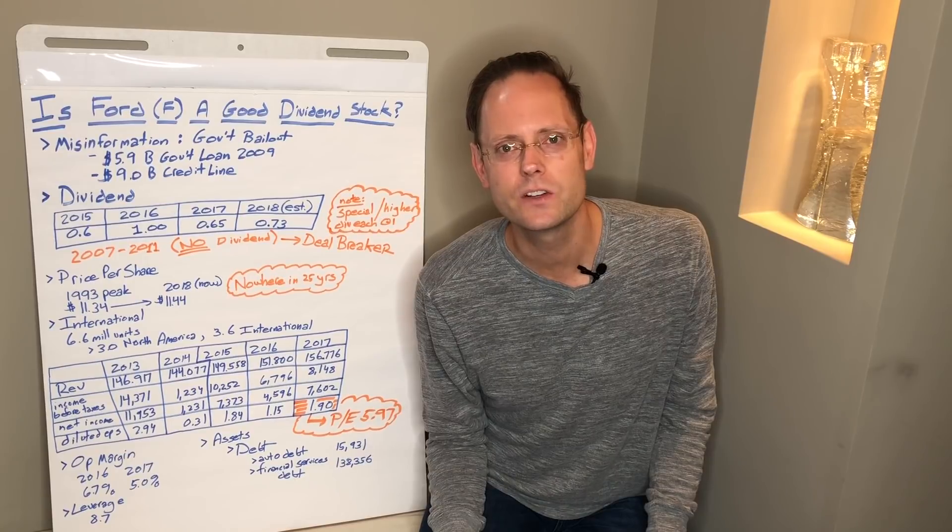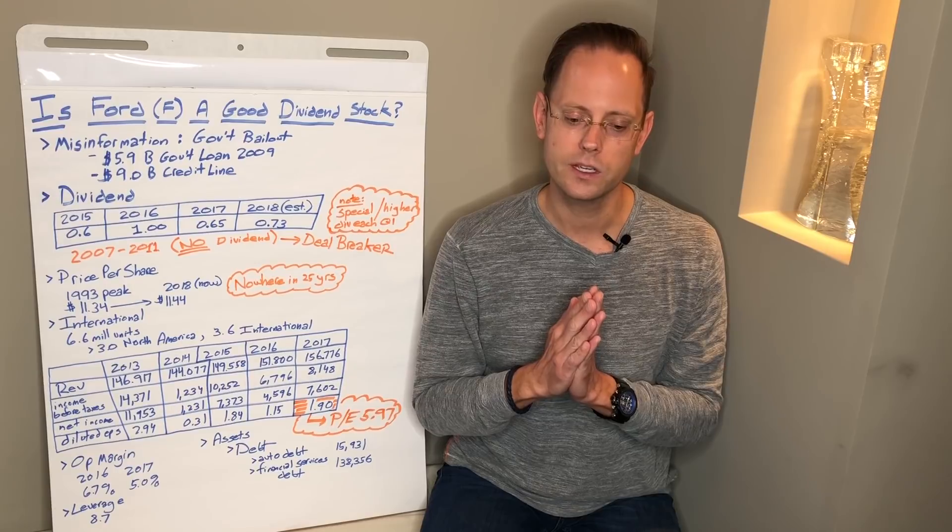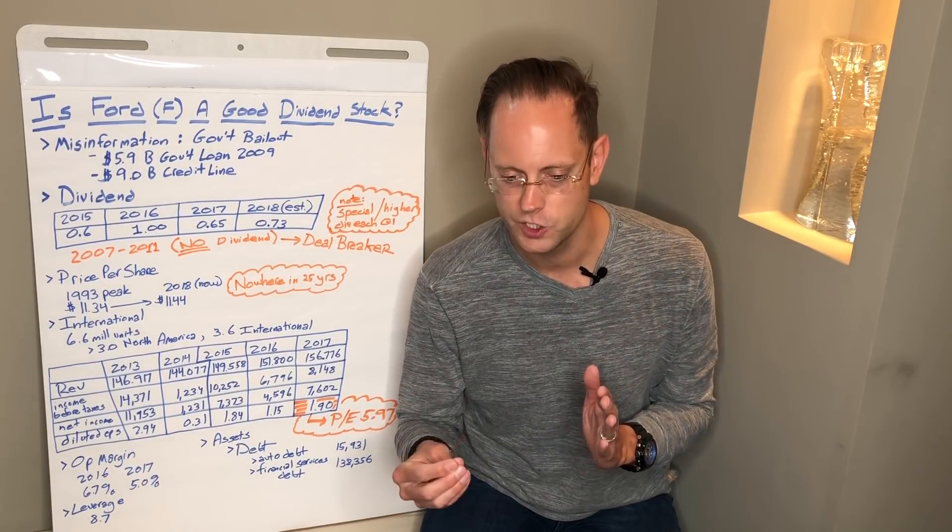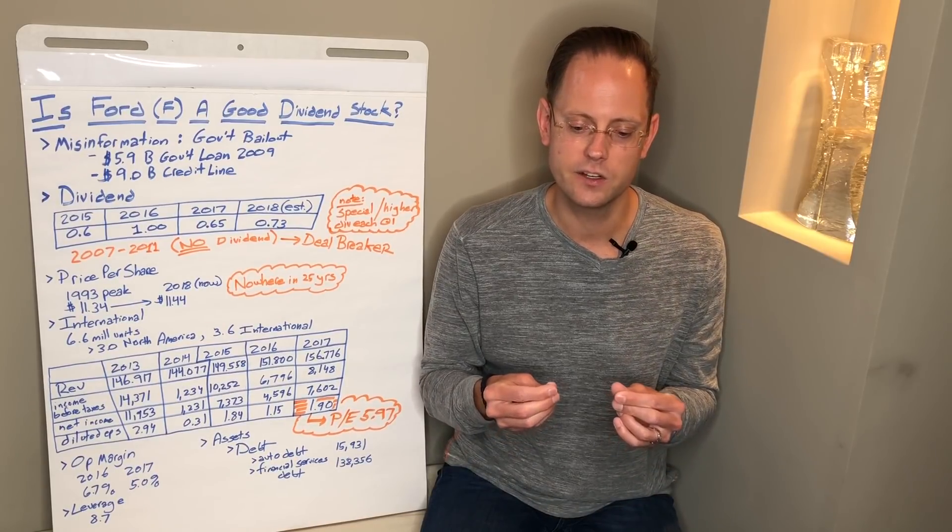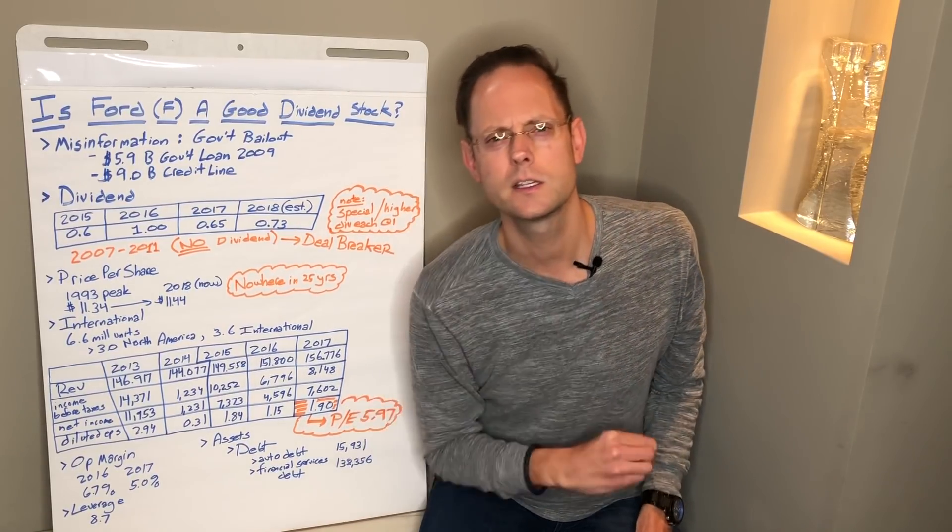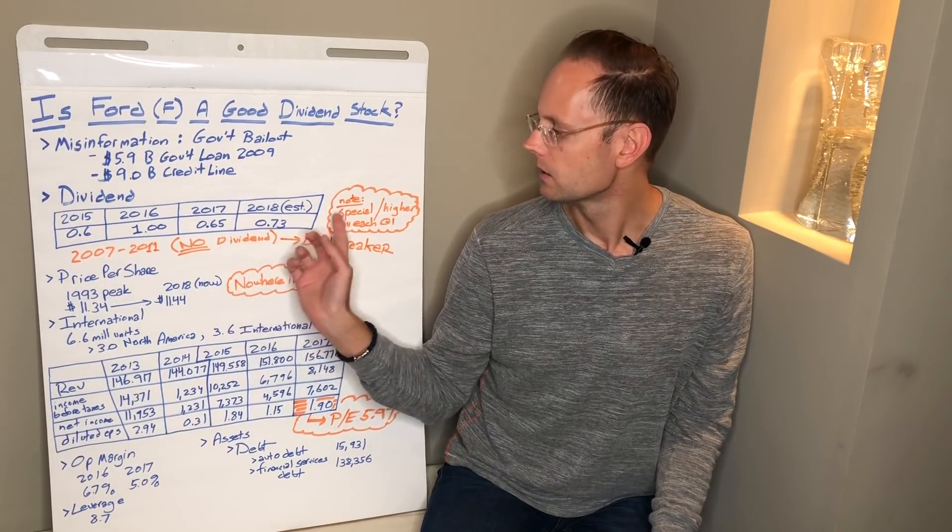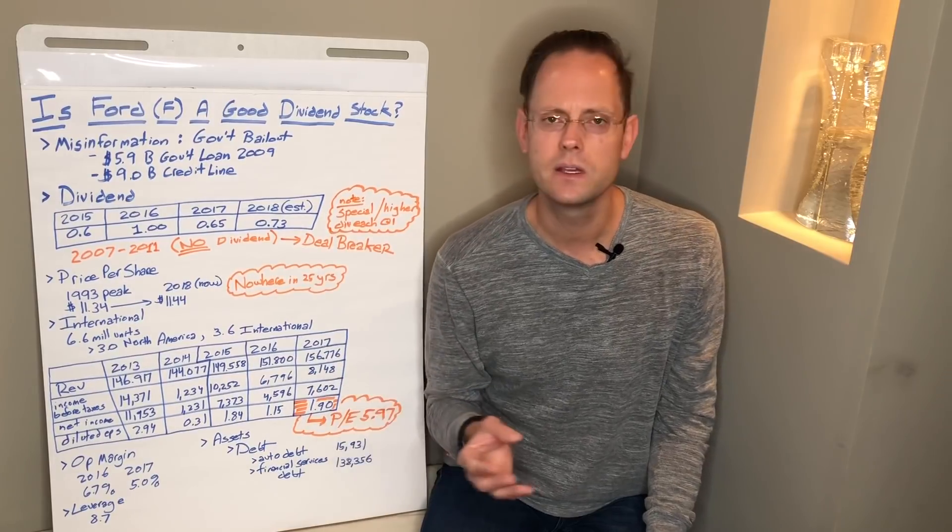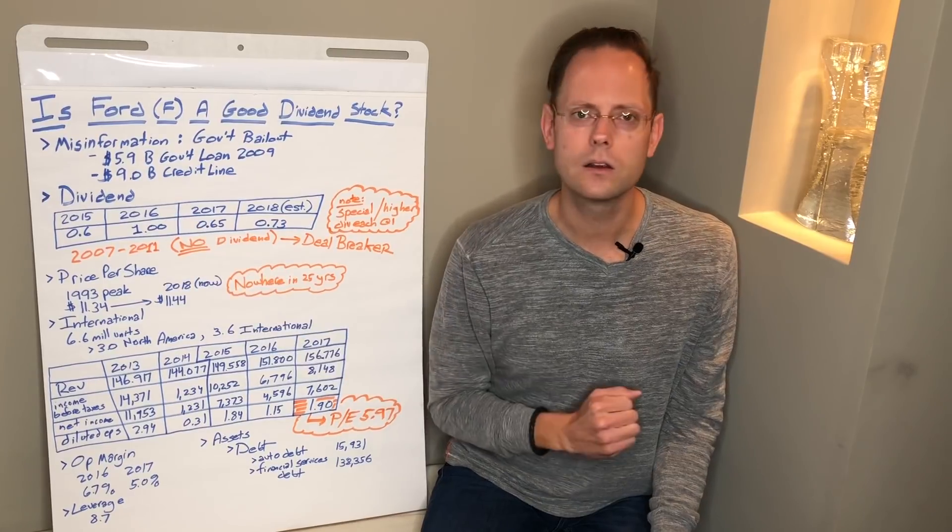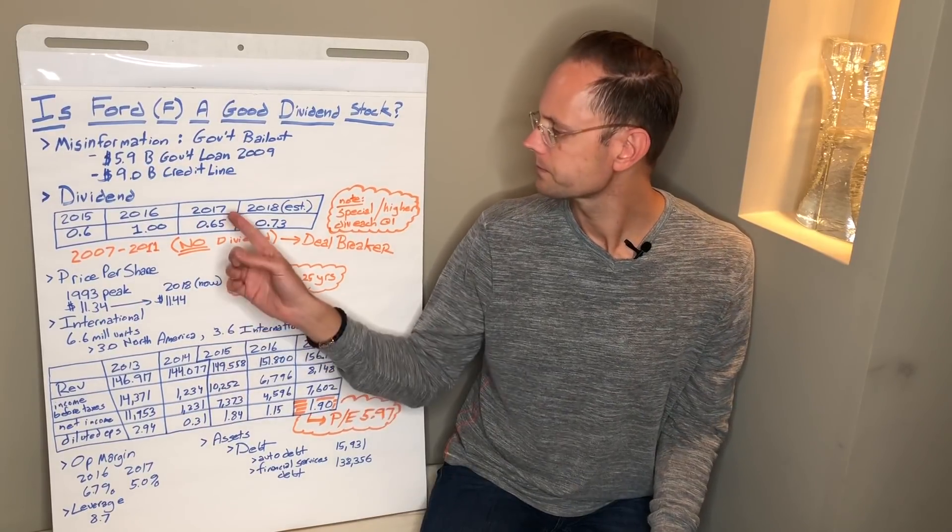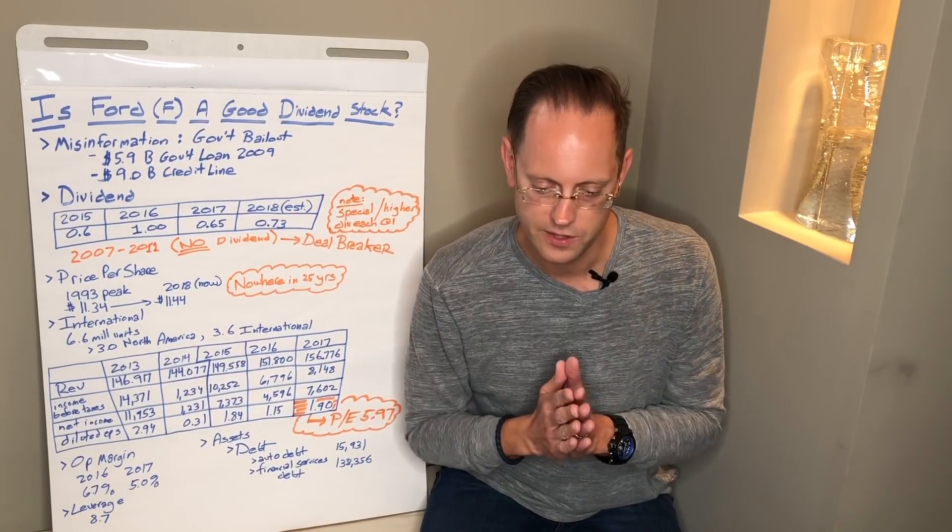What I started looking at was the dividend. I invest for dividends and passive income. The dividend stream is everything to me. I don't really concern myself as much with capital appreciation, although I like to see some capital appreciation over the long run because it's indicative of a well-run business. Ford has not had that. Let's start with the dividend though. Last few years, it's been ups and downs. $0.60 in 2015, $1 in 2016, $0.65 in 2017, and $0.73 estimated in 2018.